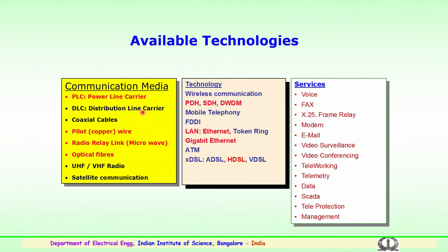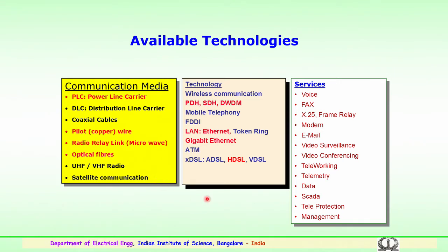Communication media could be, as mentioned earlier, power line carrier, distribution line carrier communication, simple coaxial cables, copper conductors, radio relay links particularly working at microwave frequency, optical fiber cables used in communication, very high frequency and ultra high frequency radio signals used for communication, and finally satellite communication. Several of these technologies are being used for transmission and monitoring of data.